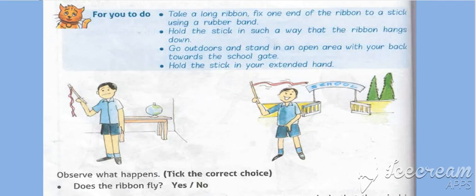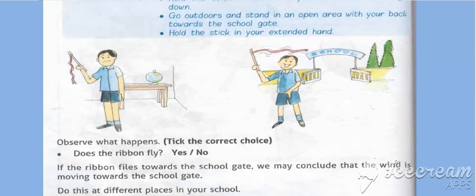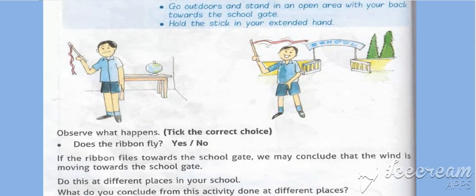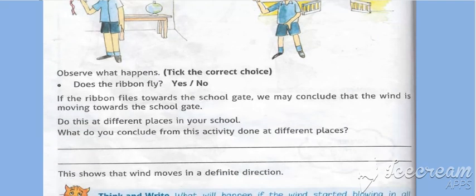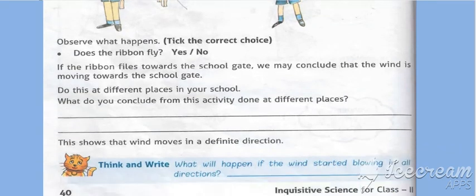There are some tasks which children and parents can do together. Observe what happens and tick the correct choice. Does a ribbon fly? Yes or no. If the ribbon flies towards the school gate, we may conclude that the wind is moving towards the school gate. Do this at different places in your school. What do you conclude from this activity? This shows that wind moves in a definite direction.